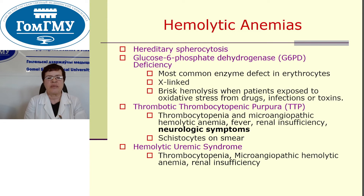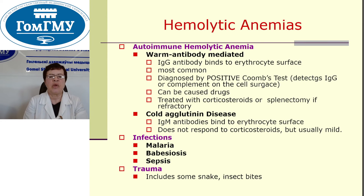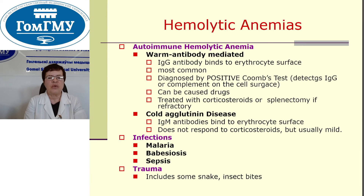Schistocytes on smear. Hemolytic uremic syndrome: thrombocytopenia, microangiopathic hemolytic anemia, and renal insufficiency. Autoimmune hemolytic anemia: warm antibody-mediated and cold agglutinin disease. Warm antibody-mediated — IgG antibody bound to erythrocyte surface — is most common, diagnosed by positive Coombs test, can be caused by drugs, and treated with corticosteroids or splenectomy if refractory. Cold agglutinin disease: IgM antibodies bound to erythrocyte surface, does not respond to corticosteroids but is usually mild. Infections such as malaria, babesiosis, and sepsis, and trauma including some snake and insect bites.